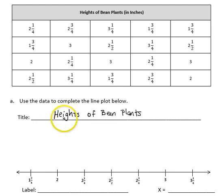Next, we need to fill in the labels at the bottom of the plot. So my first label will show that the numbers on the line plot are referring to inches, and that each x represents one plant.